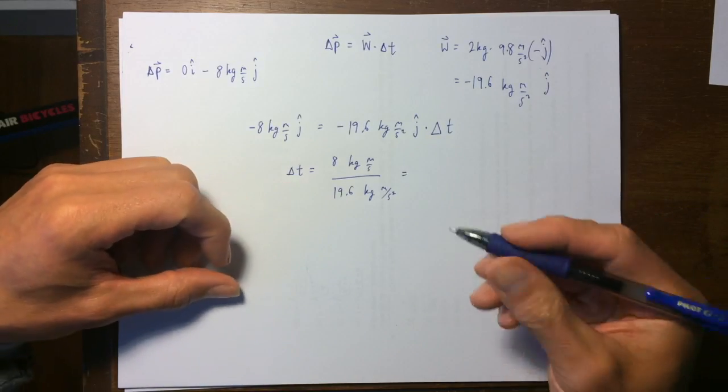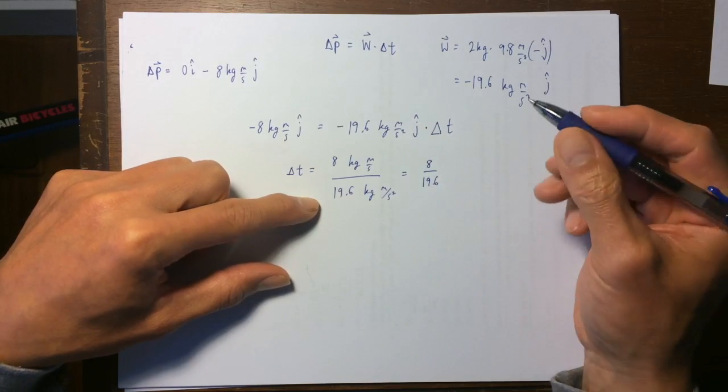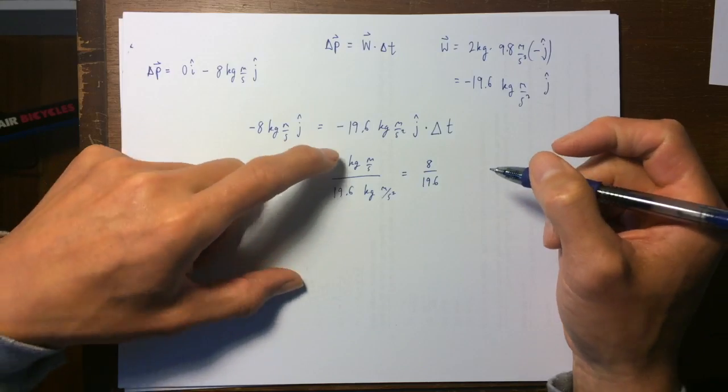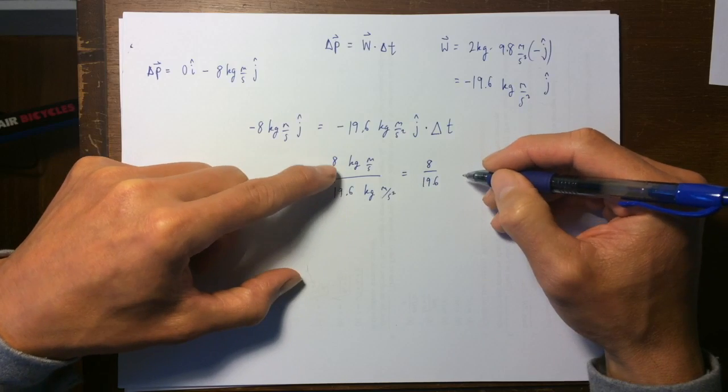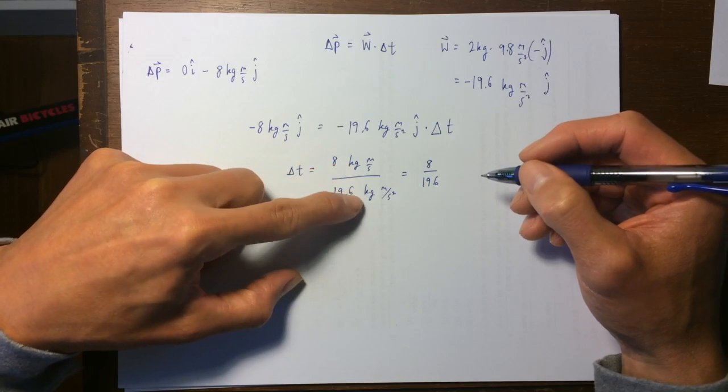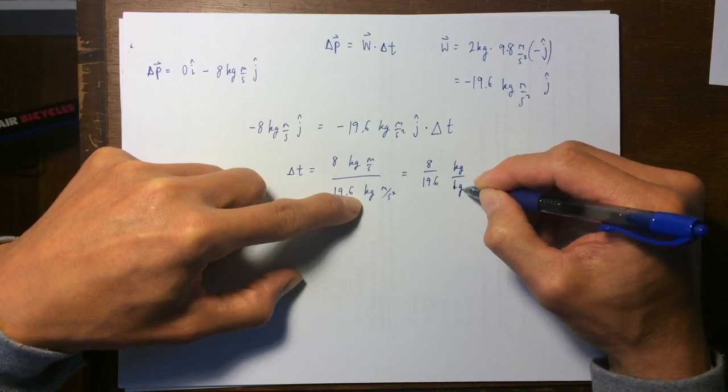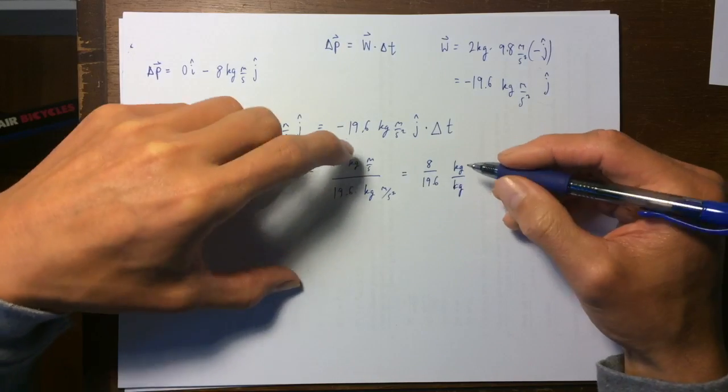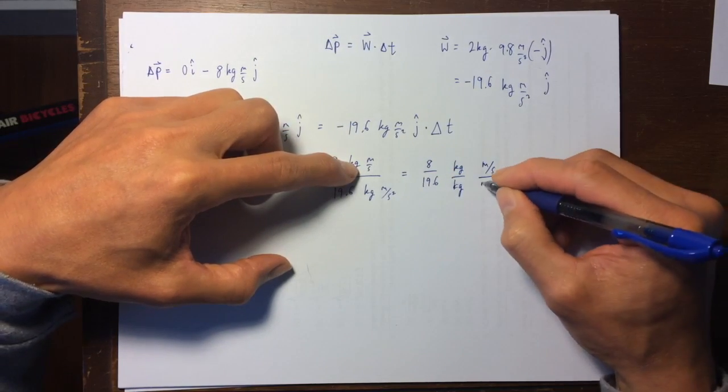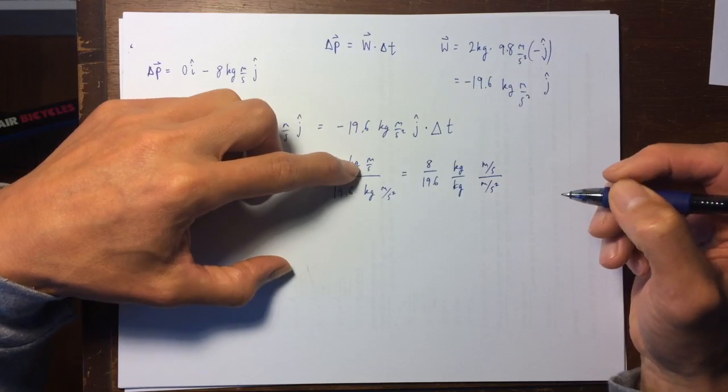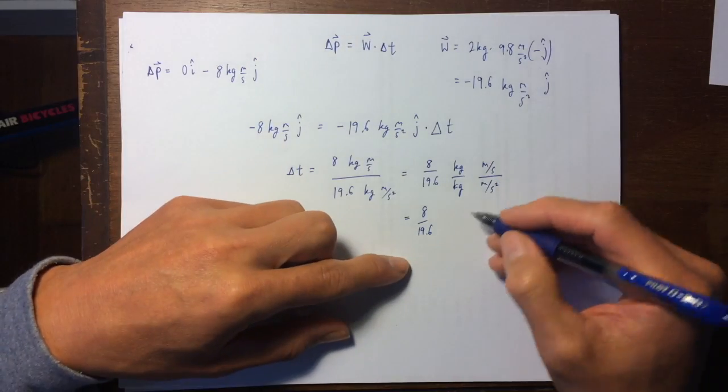You put this in your calculator, and you're going to get a time. So calculator will do the eight divided by nineteen point six part for you, but the calculator will not calculate the units. So let's be really careful about units, so kilogram and kilogram on top and bottom, that's a no-brainer, but then we have meters per second divided by meters per second squared.